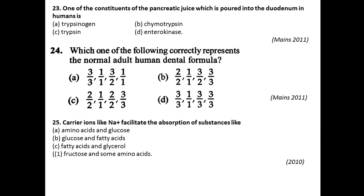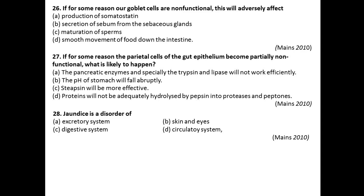Question twenty-six: If for some reason our goblet cells are non-functional, this will adversely affect? Goblet cells produce mucus. Production of somatostatin is wrong. Secretion of sebum from the sebaceous glands is also wrong. Maturation of sperms is absolutely wrong. Smooth movement of food down the intestine — this is the right answer. So option D is the right answer for this question.